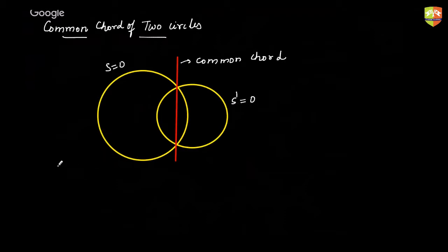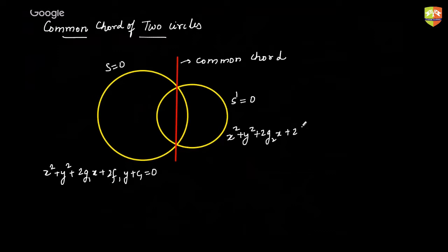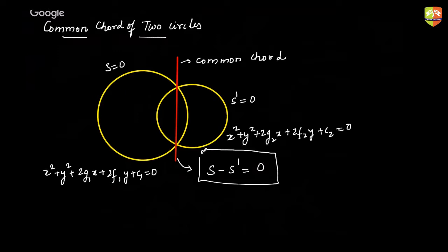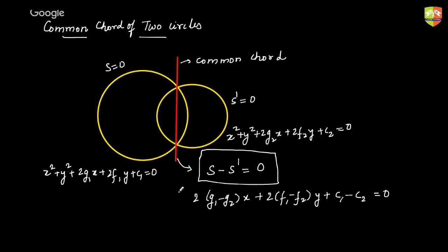We can write them in terms of a general second degree equation: x squared plus y squared plus 2g1x plus 2f1y plus c1 equal to 0, and x squared plus y squared plus 2g2x plus 2f2y plus c2 equal to 0. Then the equation of the common chord will be given by S minus S dash equal to 0. When you subtract them you get 2(g1 minus g2)x plus 2(f1 minus f2)y plus c1 minus c2 equal to 0. This is your equation of the common chord.